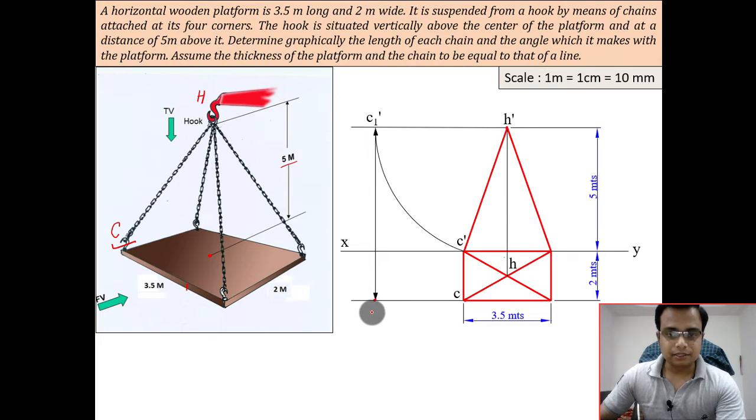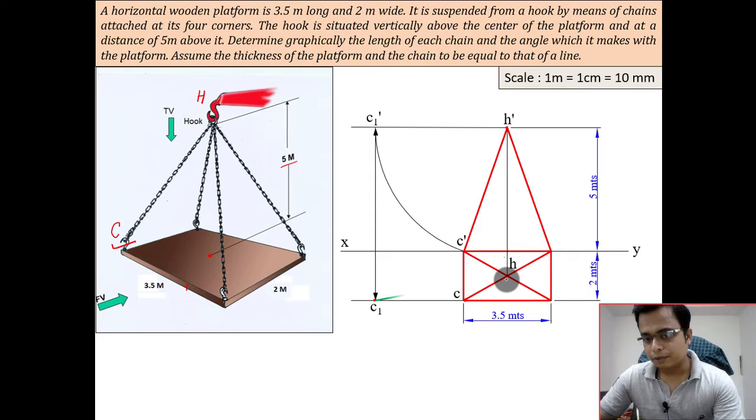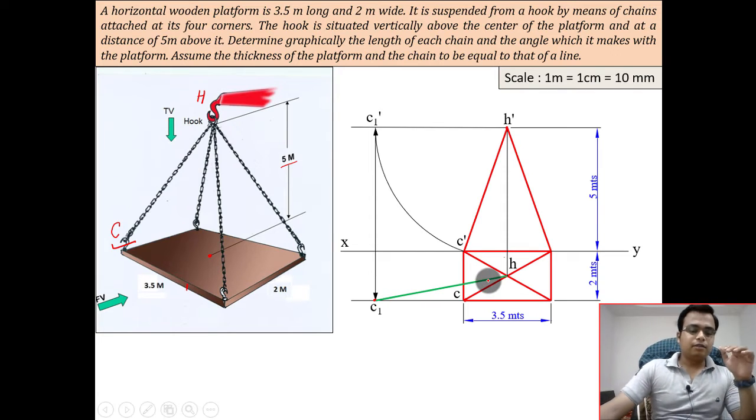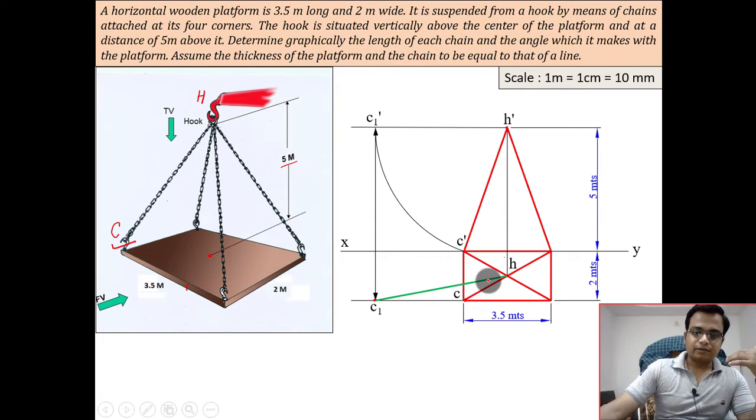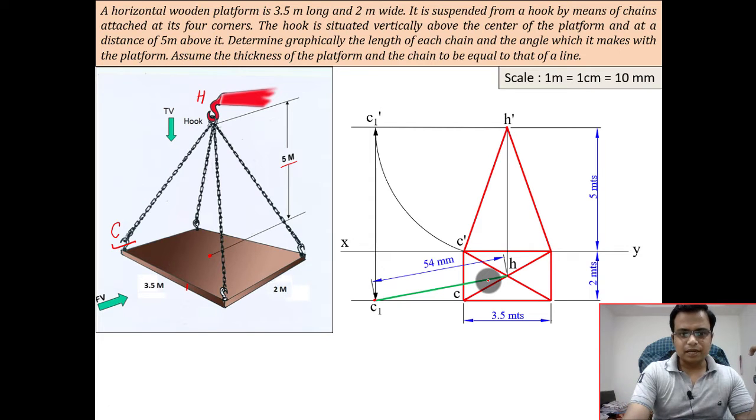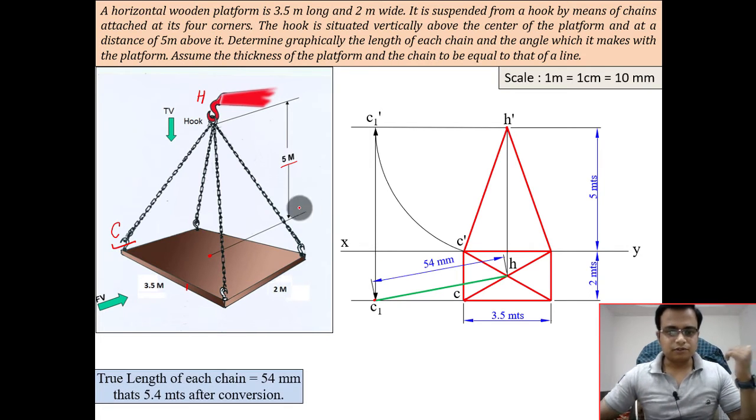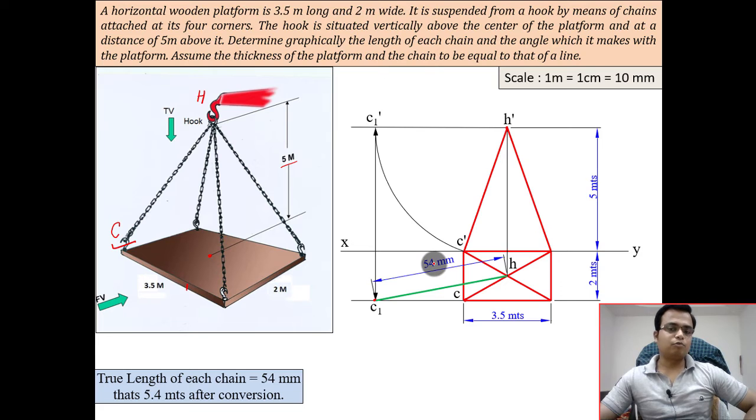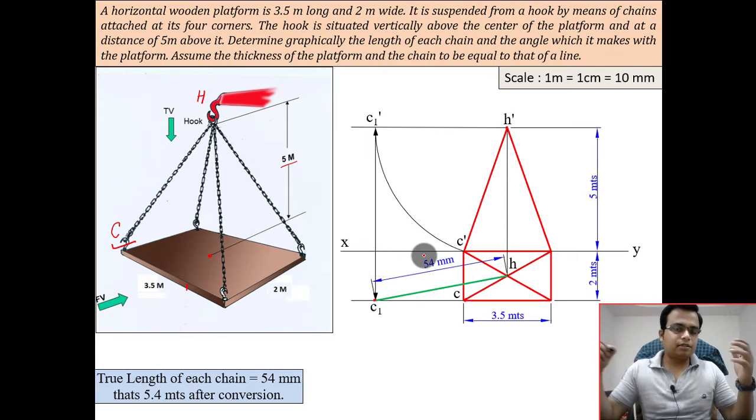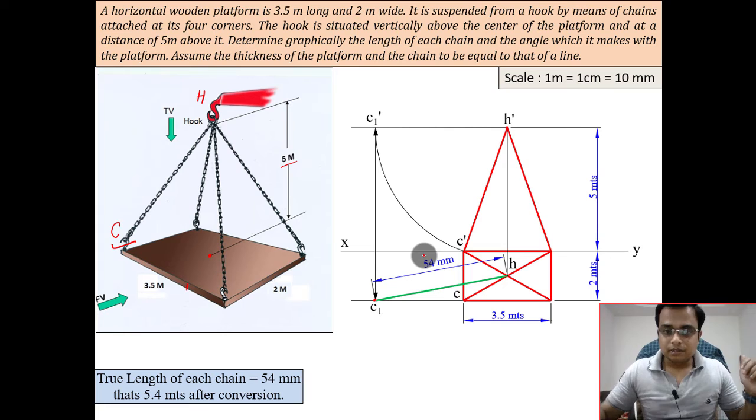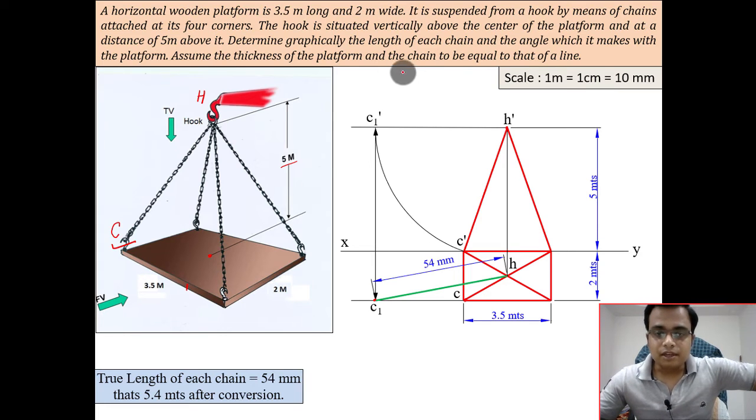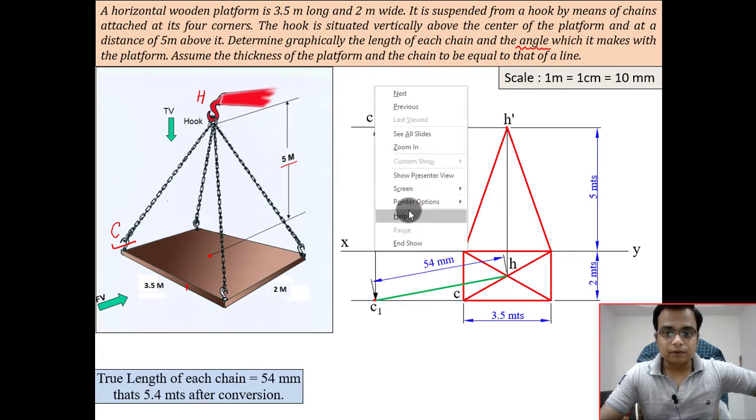The new one is going to be somewhere here in the top view, right here, and this is C1. When you join C1 with this H, you will have the true length of the chain. This is going to precisely work out as 54 millimeters, that means 5.4 centimeters, and that is 5.4 meters. Now one more thing that we have to work out is the angle that it makes with the platform.